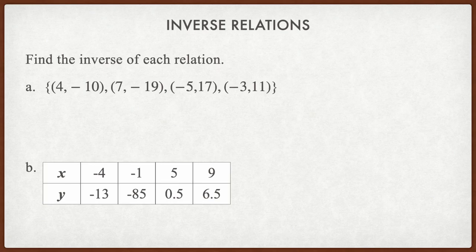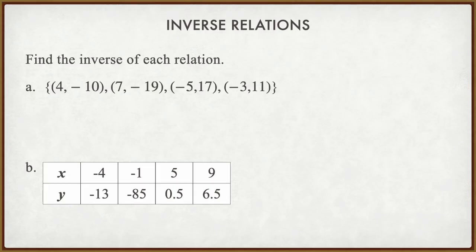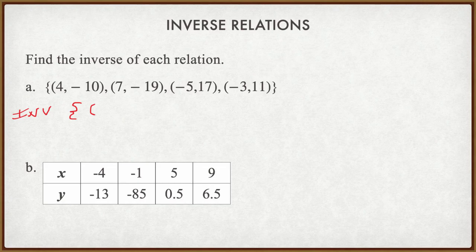If we are given a set of ordered pairs — and you'll notice this is in set notation for part A — we are just going to switch the x's and the y's around to find the inverse. For our inverse, I'm just going to use INV. I get the set of ordered pairs, and I take the point (4, -10) and switch the x and y around to get (-10, 4).